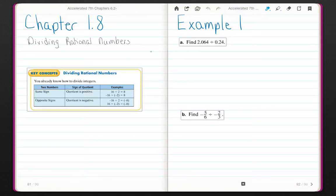Chapter 1.8 Dividing Rational Numbers. You should already know how to divide integers. 6 divided by 3 equals 2.